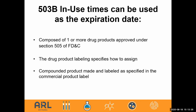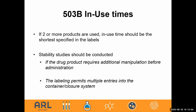For 503b, in-use times can be used as the expiration date — this is taken directly from the guidance. The preparation is composed of one or more approved drug products, and the in-use time is used as the expiration date. If two or more products are used, the in-use time should be the shortest of the specified labels. The procedures for beyond-use dating need to be reliable, meaningful, and very specific to your product, container closure, and formulation.